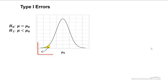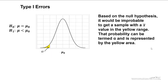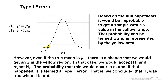We take our alpha value and put that into the lower tail. Based on the null hypothesis it would be improbable to get a sample with an average value in the yellow range. That probability can be termed alpha and is represented by this yellow region. Even if the null hypothesis is true and the true mean is mu naught, there is a chance that we would get a sample average in the yellow region. In this case we would accept the alternate hypothesis and reject the null hypothesis. The probability that this would occur is alpha, and if that happened it is termed a type 1 error — that is, we conclude that the alternate is true when in fact it is not.